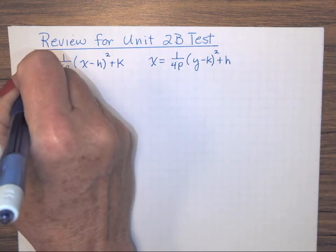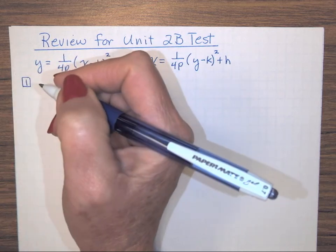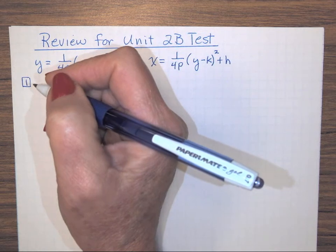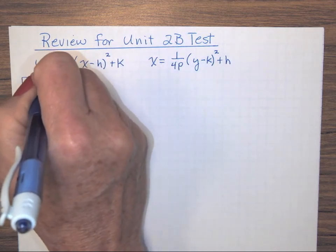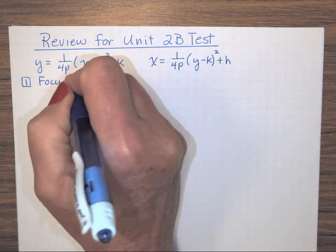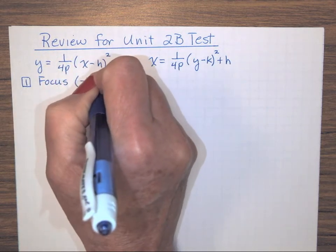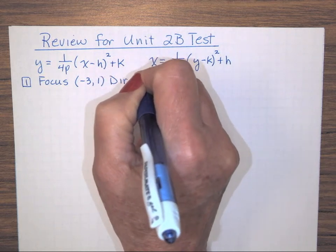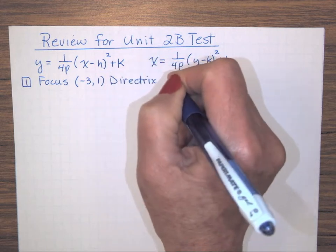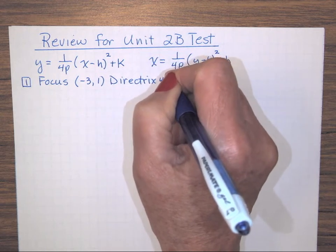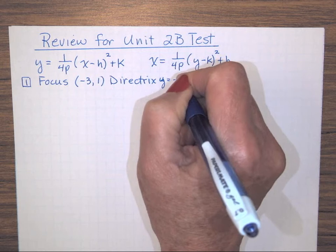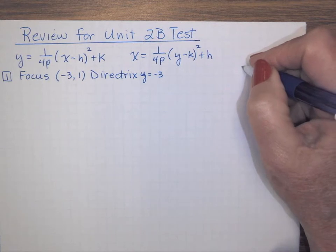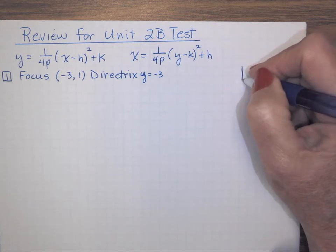On this first part, I could give you two pieces of information and ask you to come up with the equation. I could give you the focus — let's say this time the focus is at negative 3, 1 — and a directrix at Y equals negative 3. What I suggested initially was that you might do just a little quick sketch of a graph over to the side.